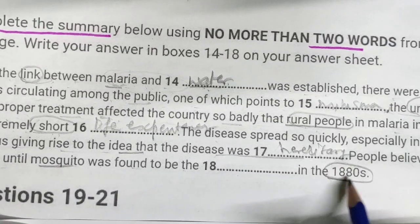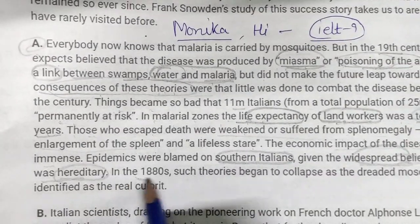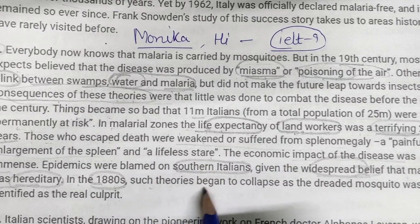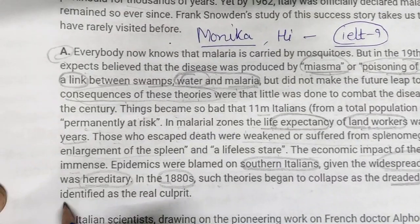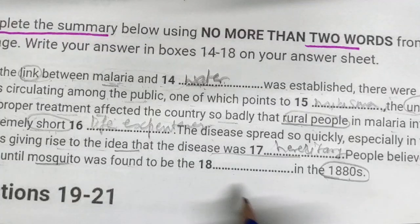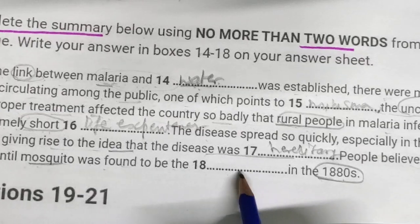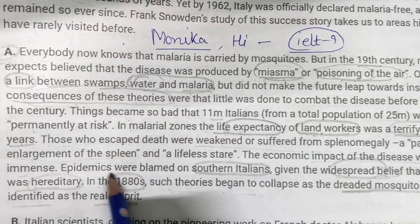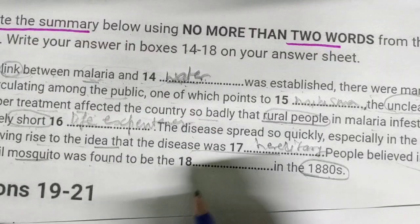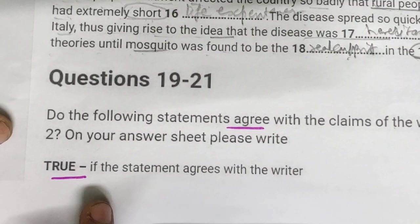The next part says: 'people believed in the theories until the mosquito was found to be [blank] in 1880.' My keyword is 1880. In the 1880s, such theories began to collapse when the mosquito was identified as the real culprit. So I will write 'real culprit' as the answer.